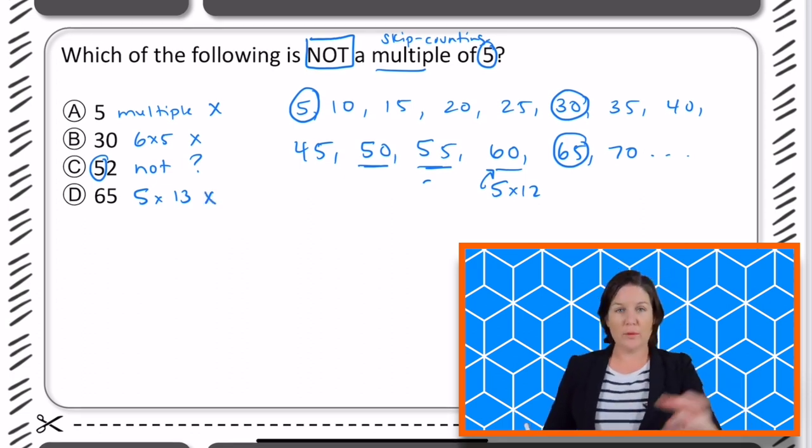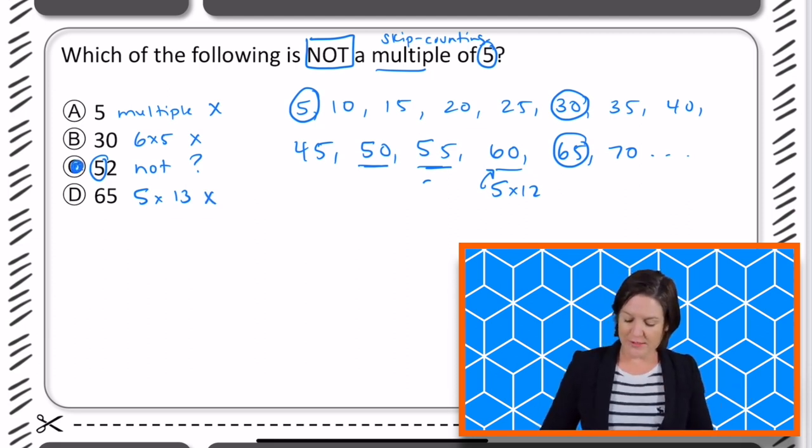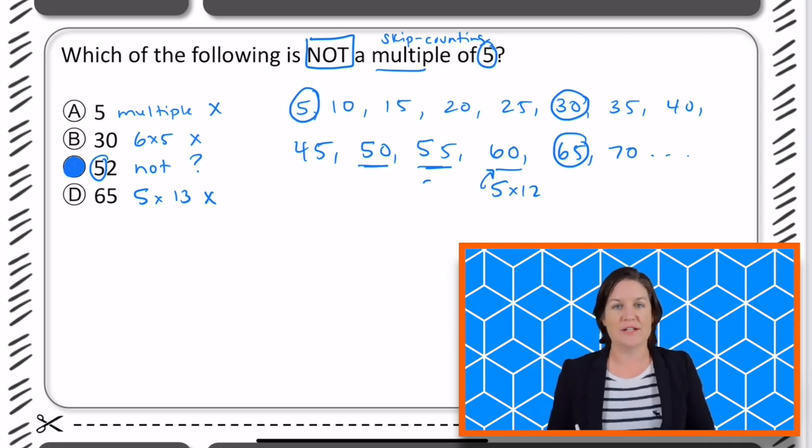So we've done all the hard work. We've eliminated three of our answers. We have kept C, so let's go ahead and make it official and bubble it in. On a computer-based test, you would just make sure that you marked the correct answer that you select in. Alright, make sure that you have all of these notes copied on your paper. And when you're ready, let's close out this video lesson.